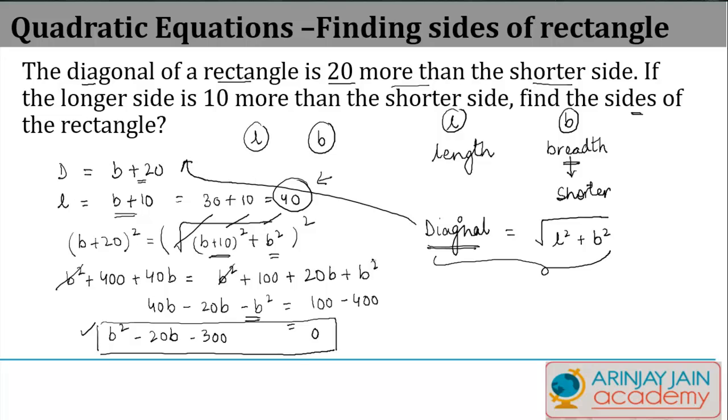To verify: the diagonal is B plus 20, which is 50. Checking with the formula: square root of 40² + 30² equals square root of 1600 + 900 equals square root of 2500, which is 50. That completes this question.